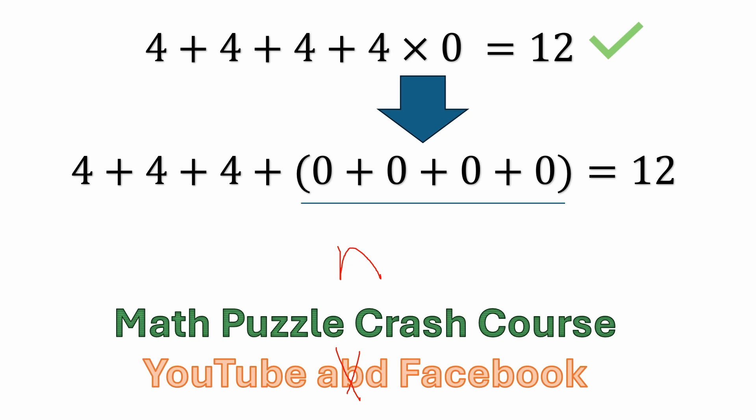4 times 0 is the same thing as adding four 0s. How many 0s would you have to add to get anything other than 0? Well, that's a silly question — you could add millions and millions of 0s and you're still going to have 0. So yes, the answer is still 12.